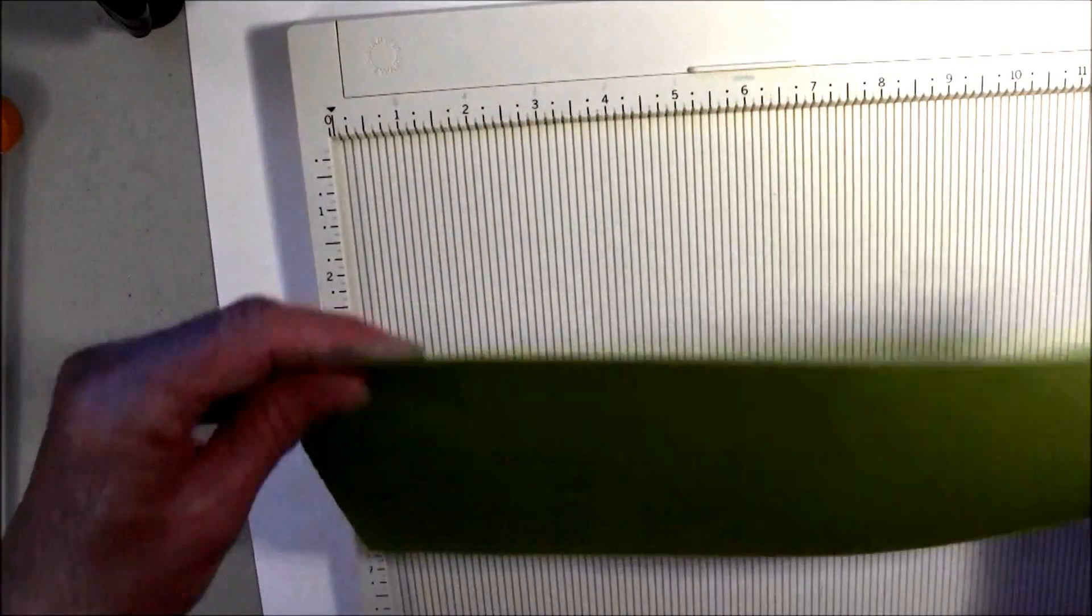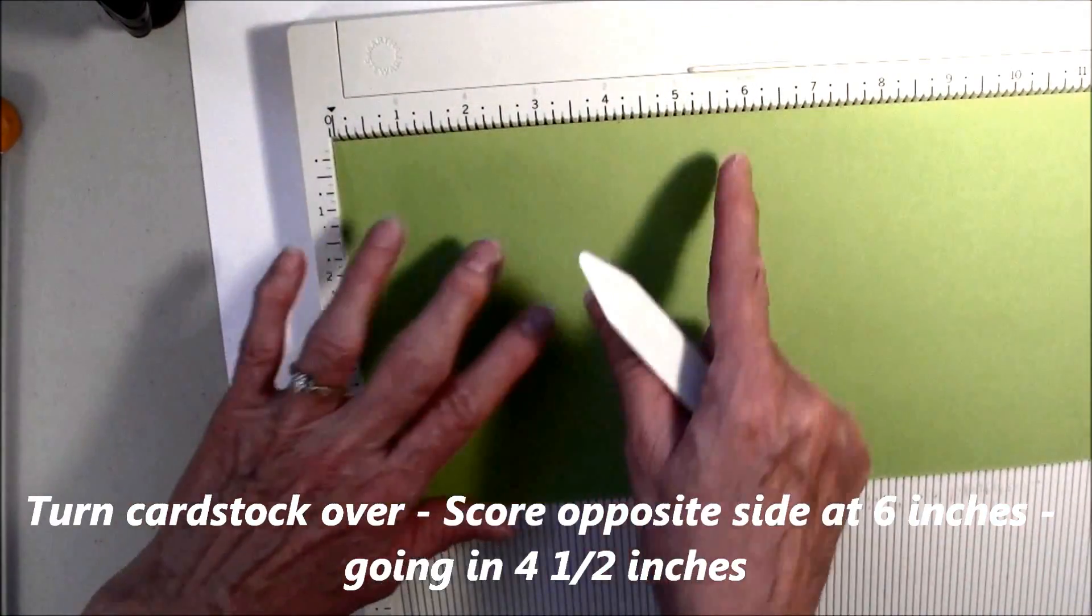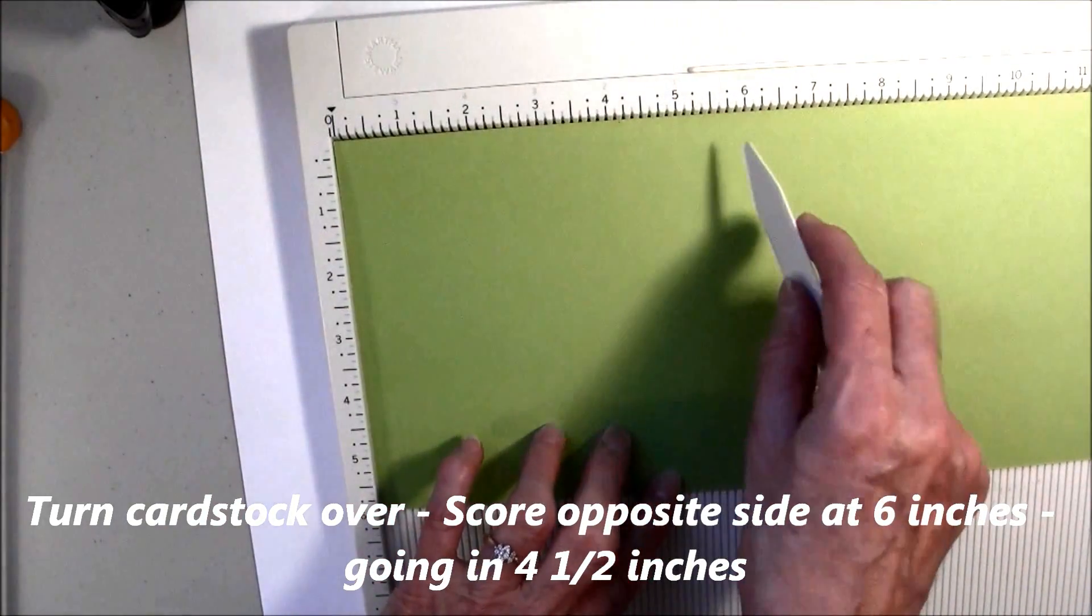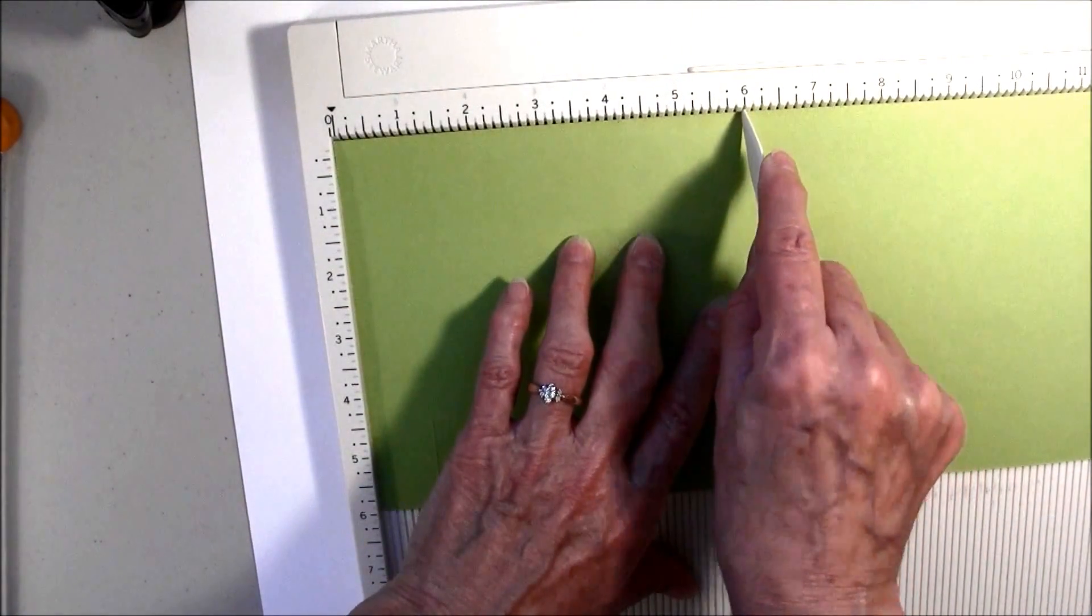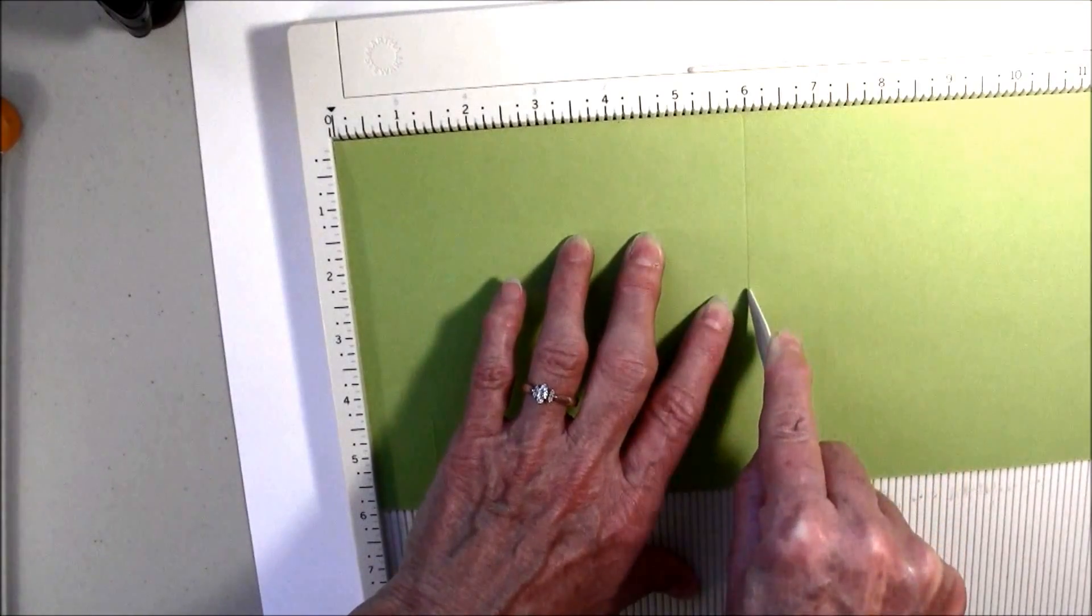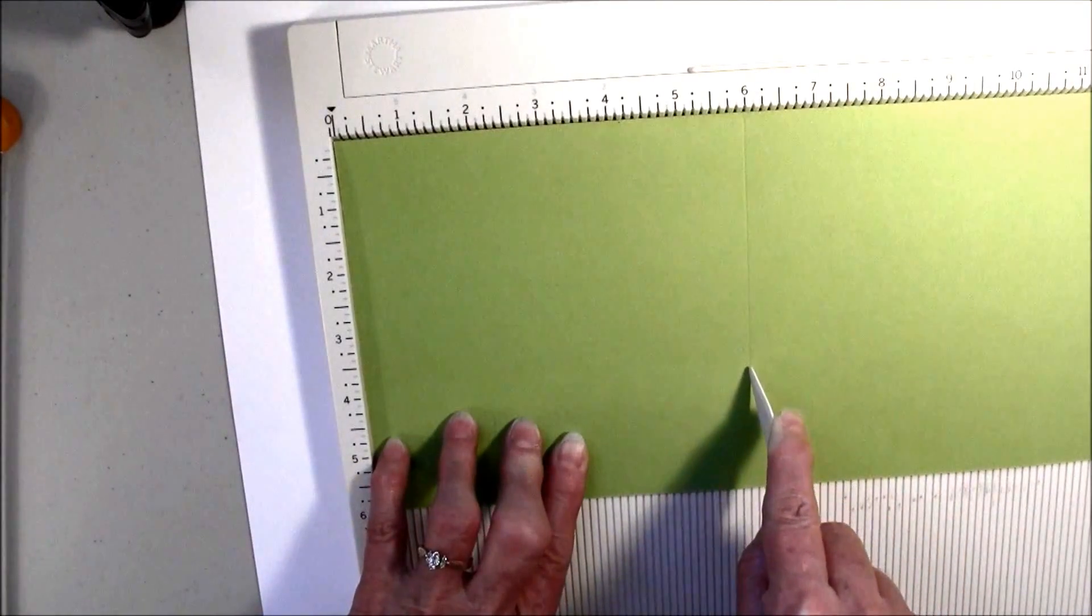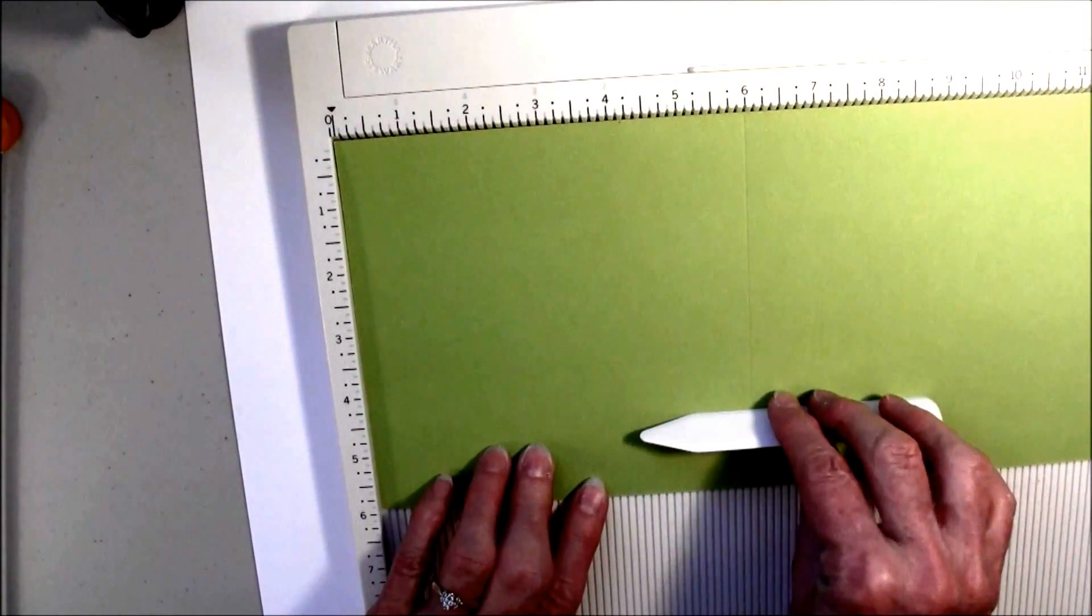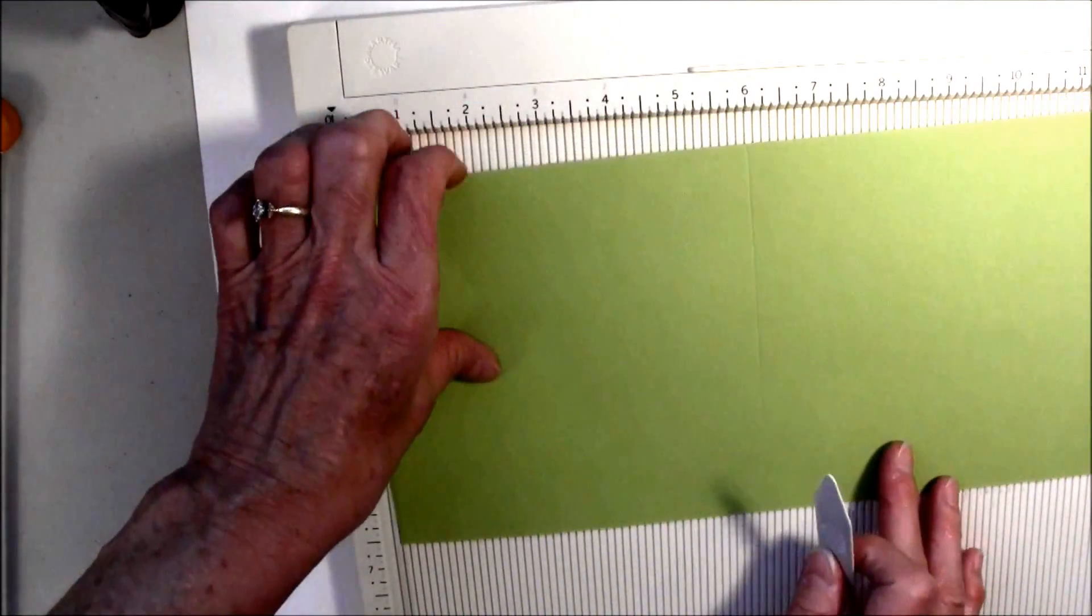Now, you're going to turn this over, and you're going to score at 6 inches. And on this side, you're going to go in 4½ inches. So, you're going to score at 6 inches, all the way in to 4½, which I'm just kind of guessing, because I didn't want to use my ruler to block your direction there.